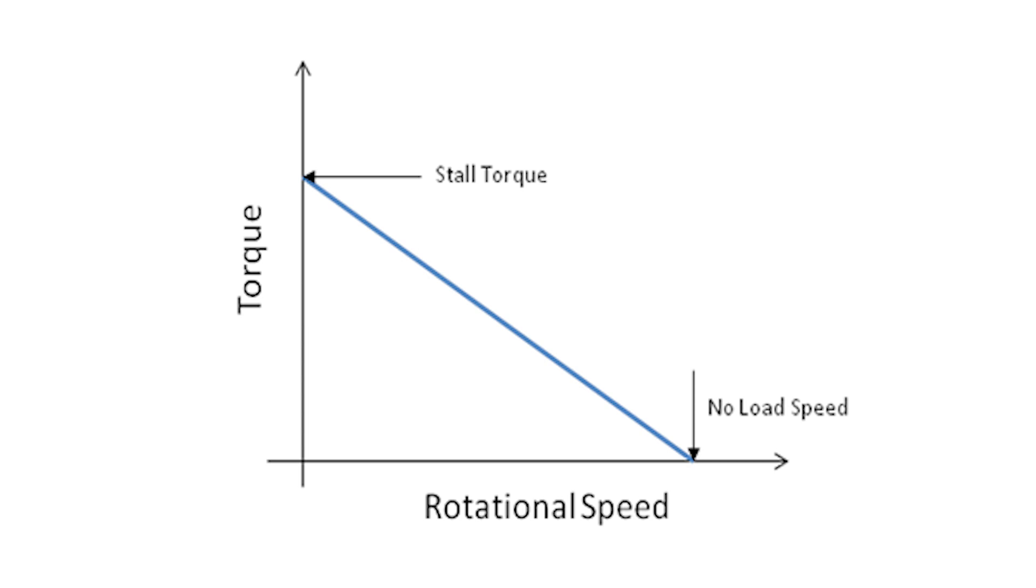The curve slopes downward until it intersects the x-axis, when torque is zero and speed is at its maximum. This point is known as the no load speed, the speed when running at nominal voltage and zero load.